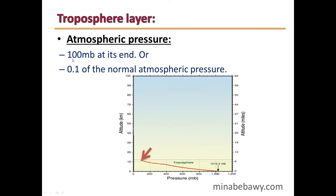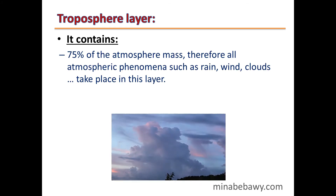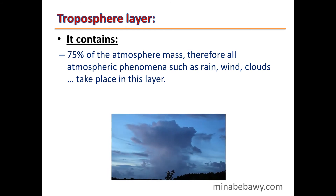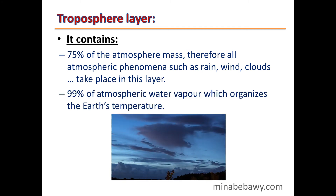The Troposphere contains 75% of the atmosphere's mass. Therefore, all atmospheric phenomena such as rain, wind, and clouds take place in this layer. It also contains 99% of atmospheric water vapor, which helps regulate Earth's temperature.